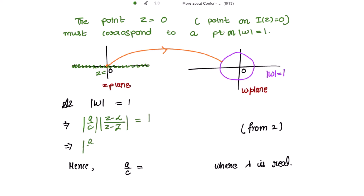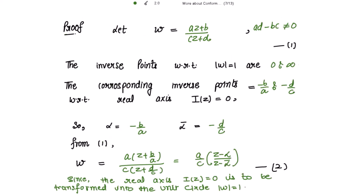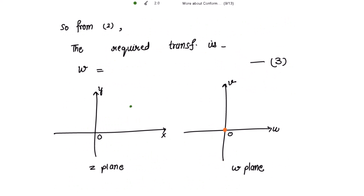Hence we can write a/c = e^(iλ), where λ is real, since its modulus equals 1. Substituting back into equation 2, the required bilinear transformation is: w = e^(iλ) · (z - alpha)/(z - alpha-bar).